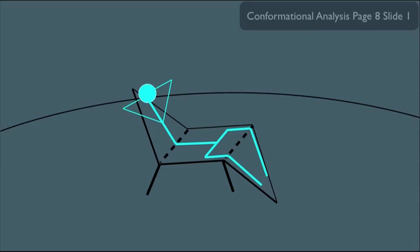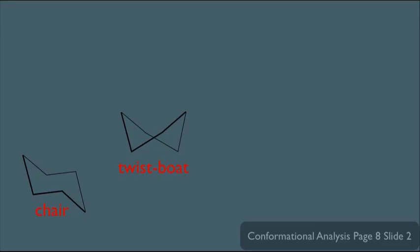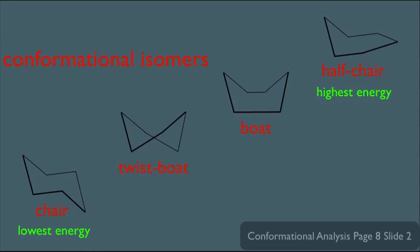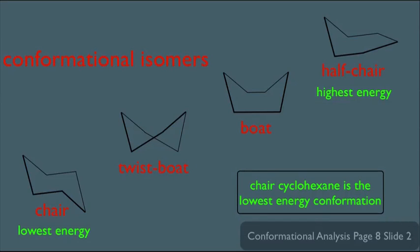It's important that we really understand the three-dimensionality of this structure. Chair cyclohexane is not the only conformation — cyclohexane can also adopt what's called a twist boat conformation, a boat conformation which kind of looks like a boat, and a half chair conformation. Notice all of these are variations of the chair, and all of these are what's called conformational isomers. The highest energy conformation is half chair, and the lowest energy conformation is chair, with twist boat and boat in between. This is our first principle in conformational analysis of cyclohexane.